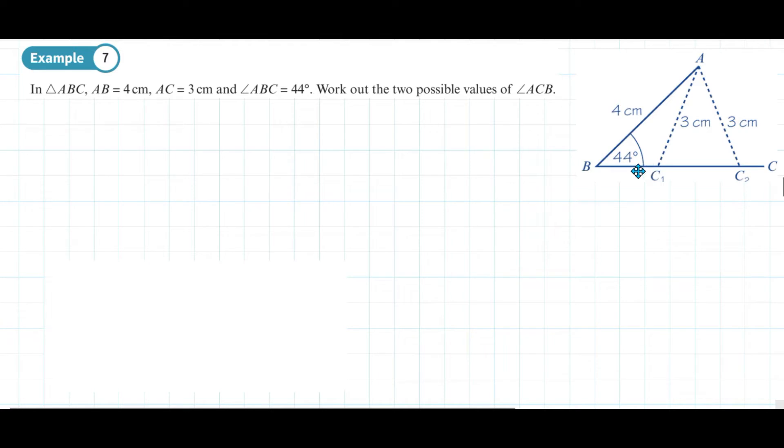If we put a baseline in with an angle of 44 degrees on our first line of 4 centimeters, there are two alternative positions for this line that is 3 centimeters long. So effectively, angle ACB could be an obtuse angle or it could be an acute angle, and this is the ambiguous case.